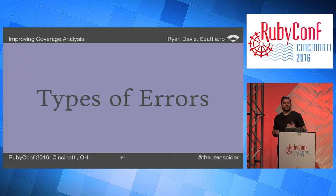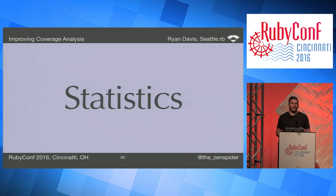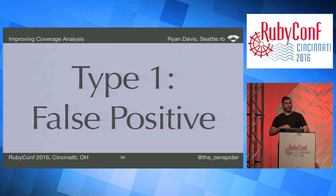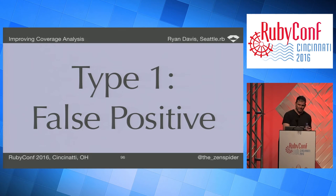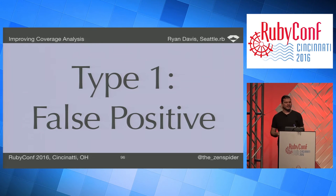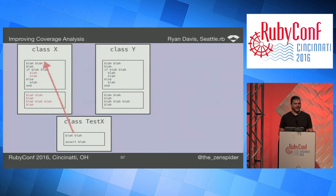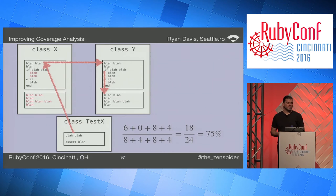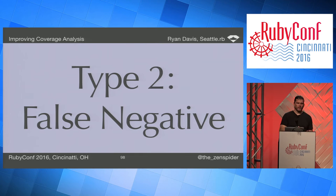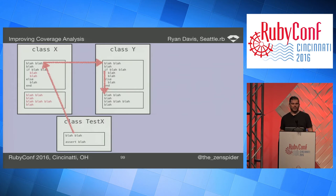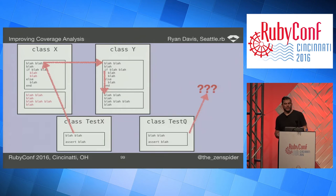SimpleCov is a viable tool, but unfortunately has all the flaws that `coverage` has. Before getting into those flaws, we need to talk about types of errors. Statistics classifies: Type 1 error — also known as false positive — means you've detected something you should not have. For example, if test X calls into class X which calls into Y but you haven't verified Y's results at all, you get an erroneously high percentage. Type 2 error — false negative — means you've not detected something you should have.